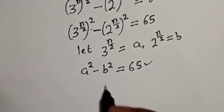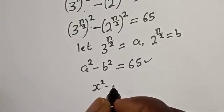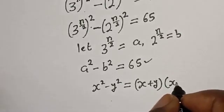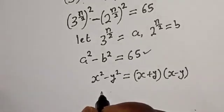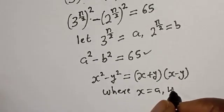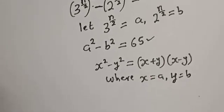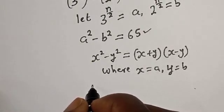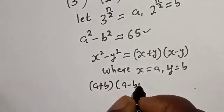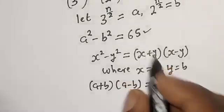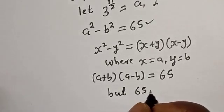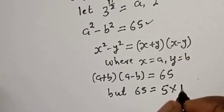This is a difference of two squares. Take note of the rule that x squared minus y squared equals x plus y multiplied by x minus y, where x equals a and y equals b. So we have a plus b multiplied by a minus b is equal to 65.